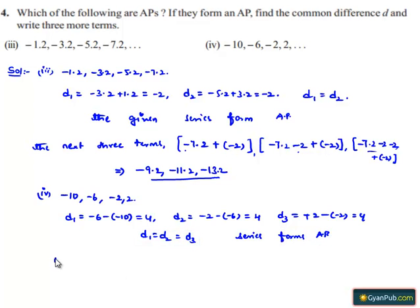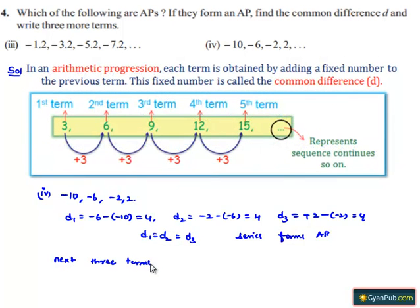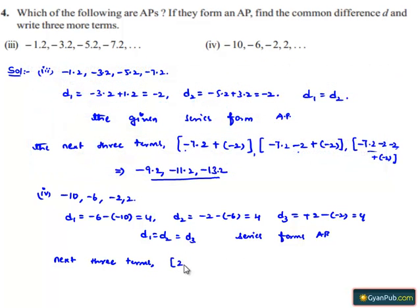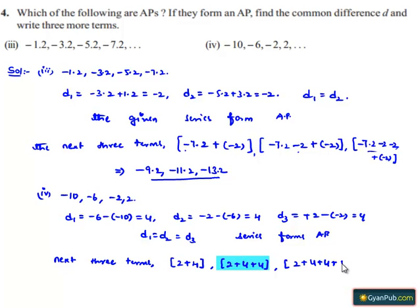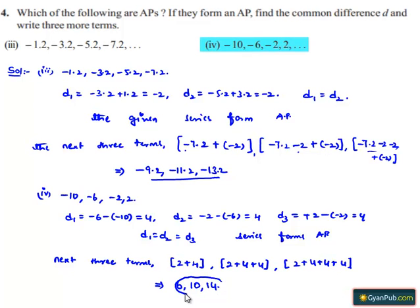The next three terms can be obtained by adding the common difference to consecutive terms. The last term is 2, so the next term will be 2 plus 4 equals 6; the term after that will be 2 plus 4 plus 4 equals 10; and the next will be 2 plus 4 plus 4 plus 4 equals 14. Therefore, the required three terms are 6, 10, and 14.